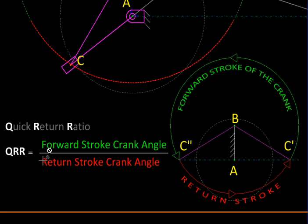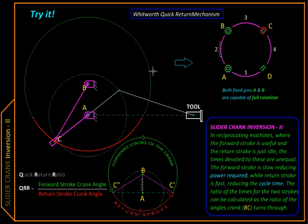So the ratio of these two angles is the ratio of these two time slices within which the tool is moved forward and then brought back. That is quick return ratio. The mechanism that we saw here is called the Whitworth quick return mechanism, and it is derived from the second inversion of slider crank.